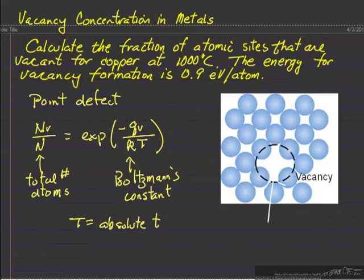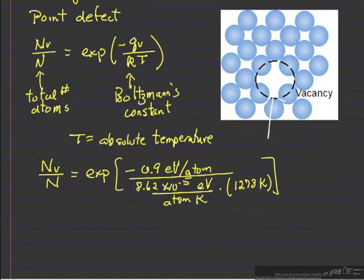So what I've done here is substitute in the values, put Boltzmann's constant in units of electron volts per atom degrees Kelvin, so this is a thousand degrees C converted to Kelvin.